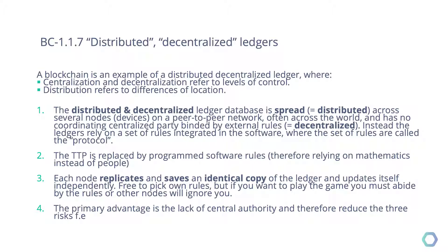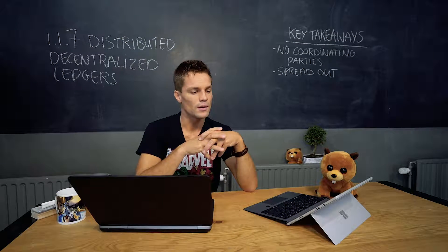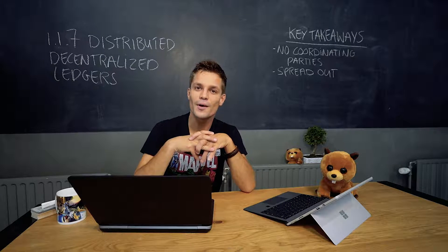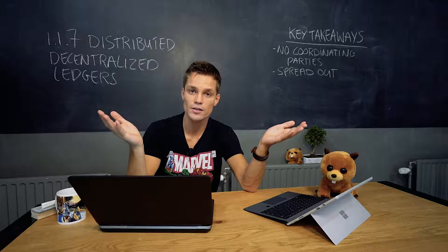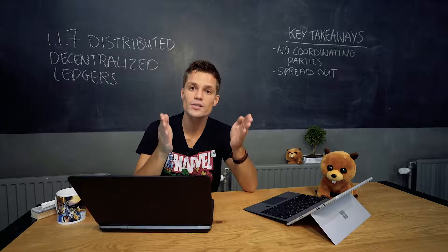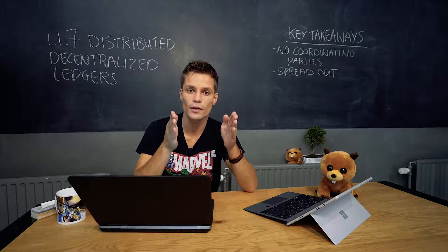Decentralization means that not only do you make a copy of yourself, but you remove yourself. It won't be only you recording the transactions — other people can equally join as a node as well. Not only will there be multiple variants of you recording or maintaining the ledger, but other people as well. That way, not only you are in control, but other parties too. You now know what a distributed decentralized ledger is and what it does: it records transactions without the use of a trusted third party.